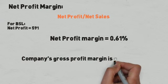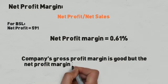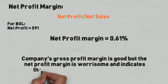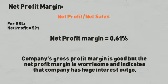The company's gross profit margin is good, but the net profit margin is worrisome and indicates that the company has huge interest outgo. Now comes the Liquidity Ratio.